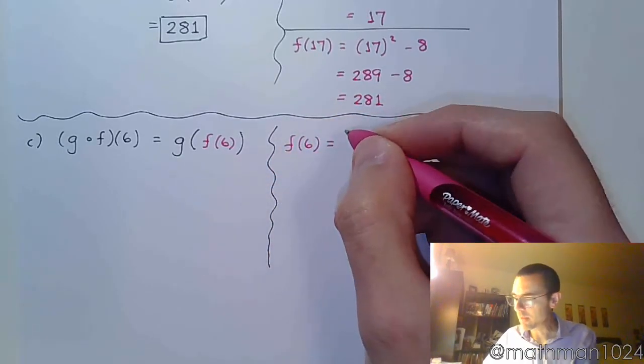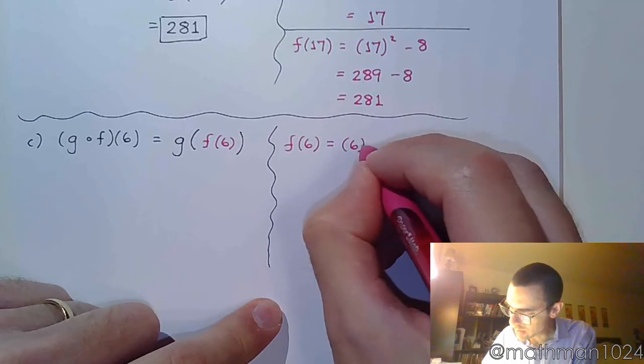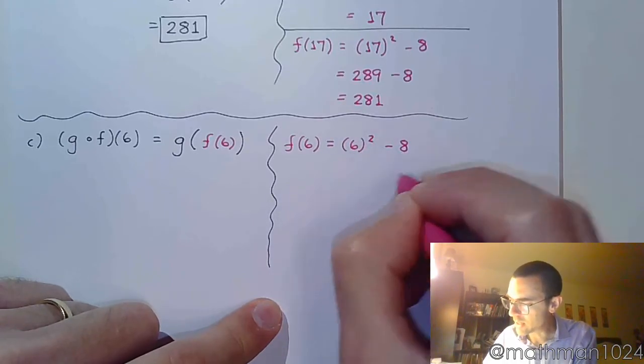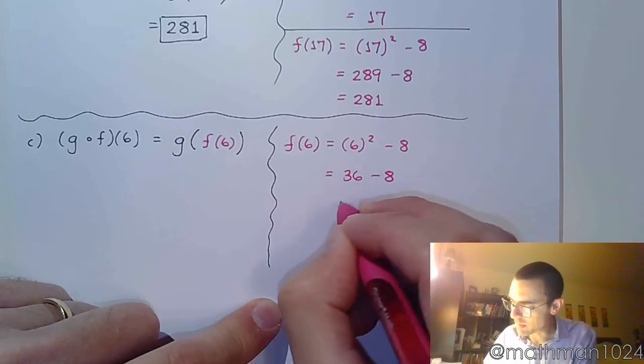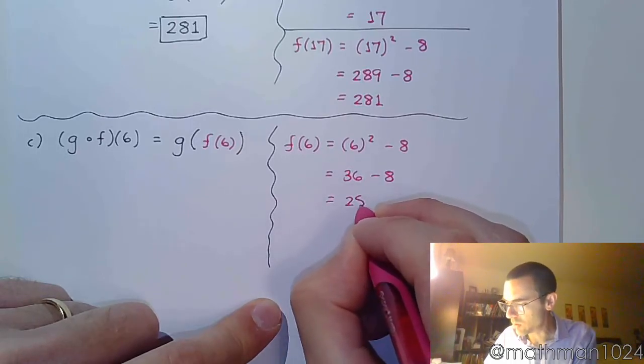All right. So f of 6, still using the same f at the top of the page, means 6 squared minus 8. So 36 minus 8 is equal to 28.